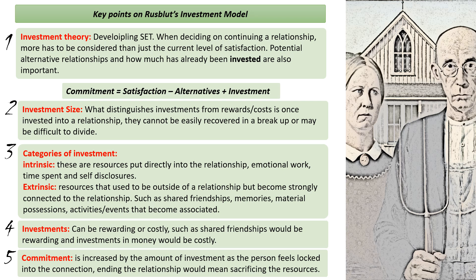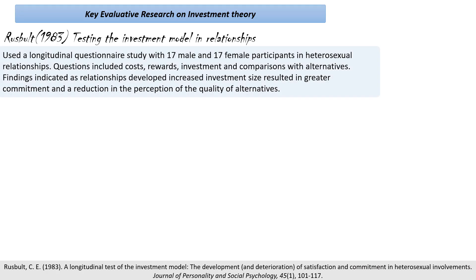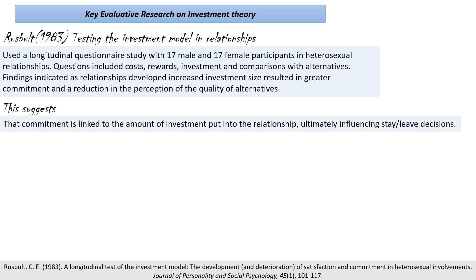So what can we say in evaluative research? I'm going to go back to Rusbult's longitudinal study. In this study, 17 male and 17 female participants were given questionnaires about the development of their relationship, which included costs, rewards, investments, and comparison with alternatives. Rusbult found that as relationships developed over time, investment size would increase, and that resulted in greater commitment. It also resulted in a reduction of how they felt about the alternatives around them — increased investment meant they just didn't look at other people as potential alternative partners. This suggests that commitment is linked to the amount of investment put into a relationship and will ultimately influence a stay-leave decision.